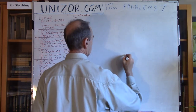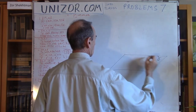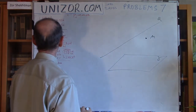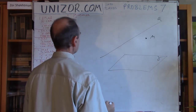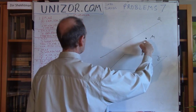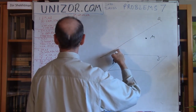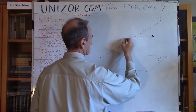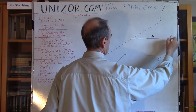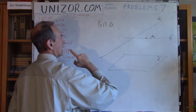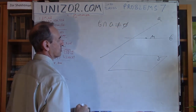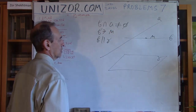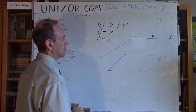Next, problem two: we have a plane gamma, a point M, and a line A. What we have to do is draw a line B through M which intersects A and is parallel to gamma. So B is supposed to intersect A (their intersection is not empty), B is supposed to contain point M, and B is supposed to be parallel to plane gamma. Those are our conditions for line B.